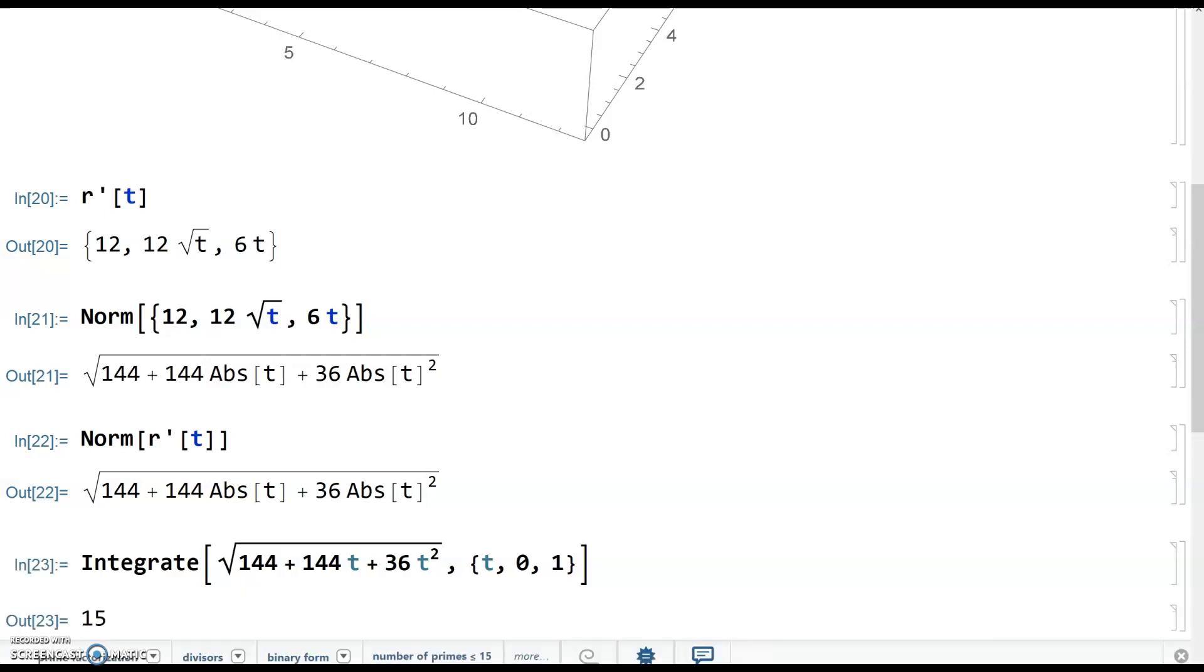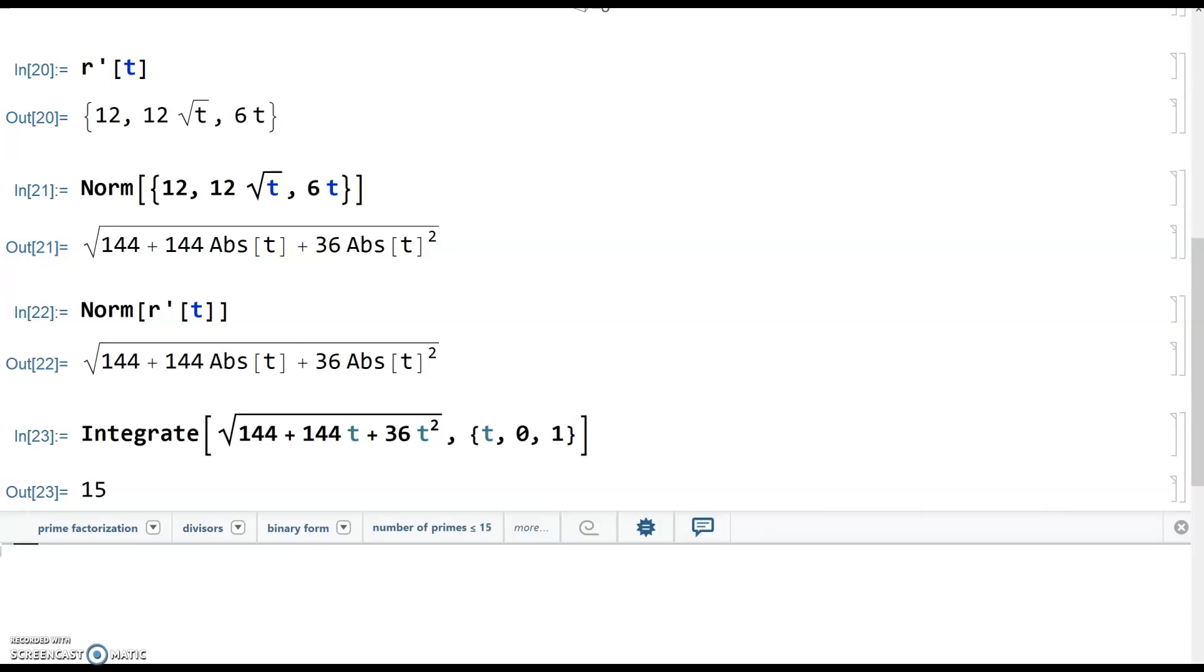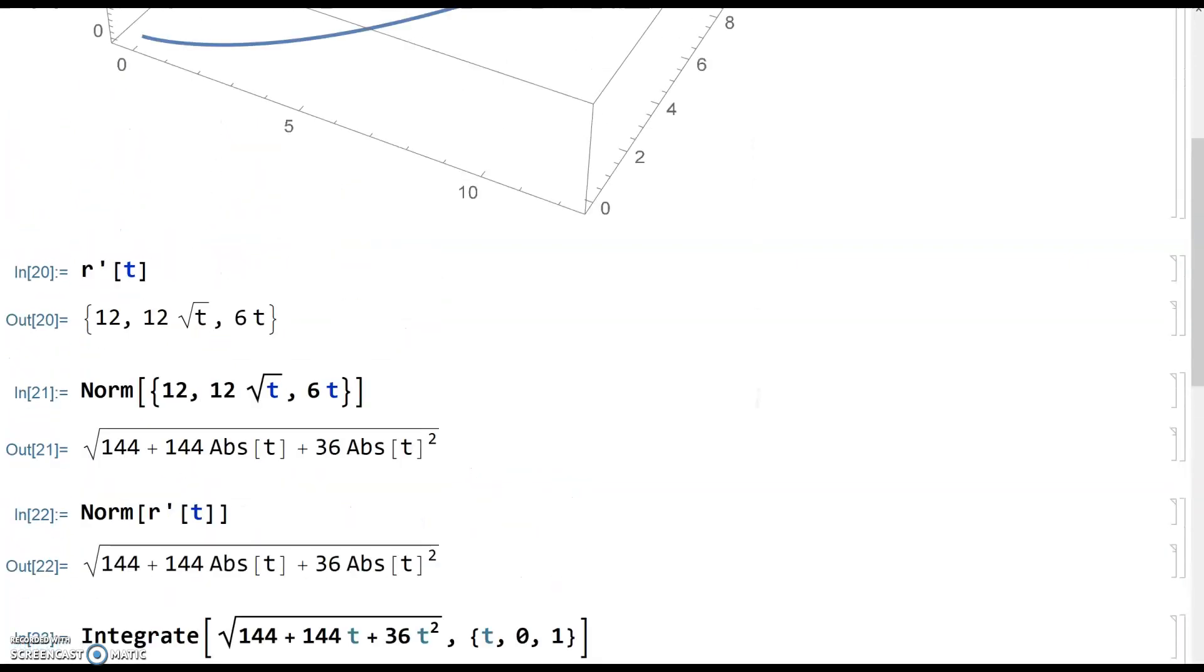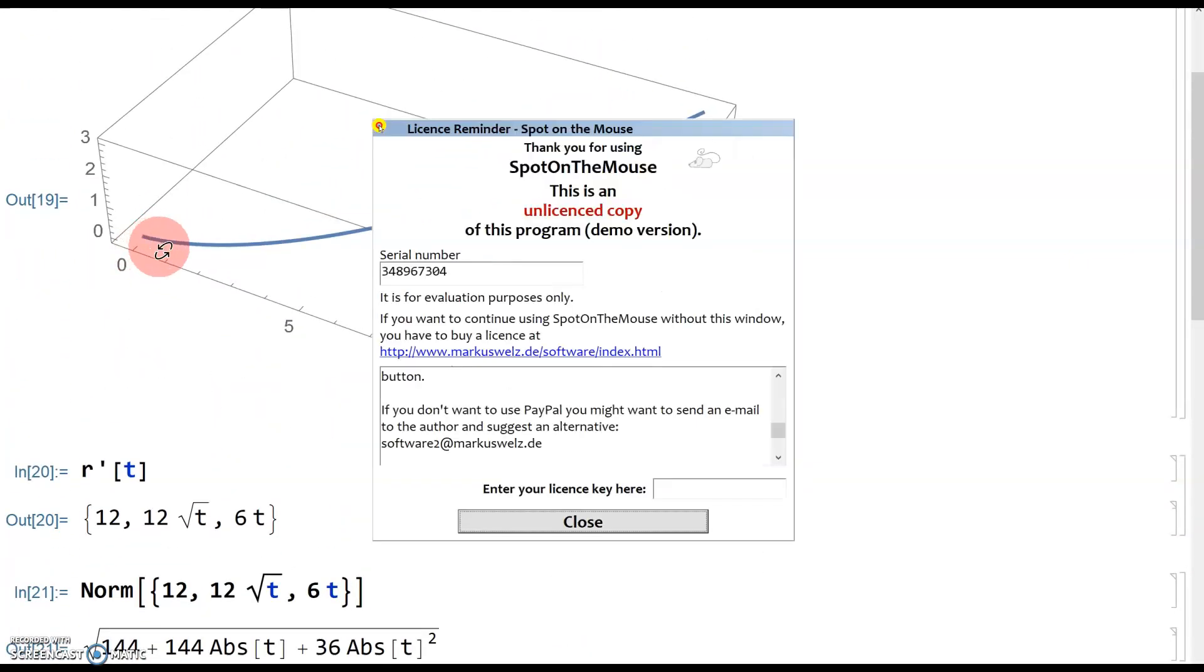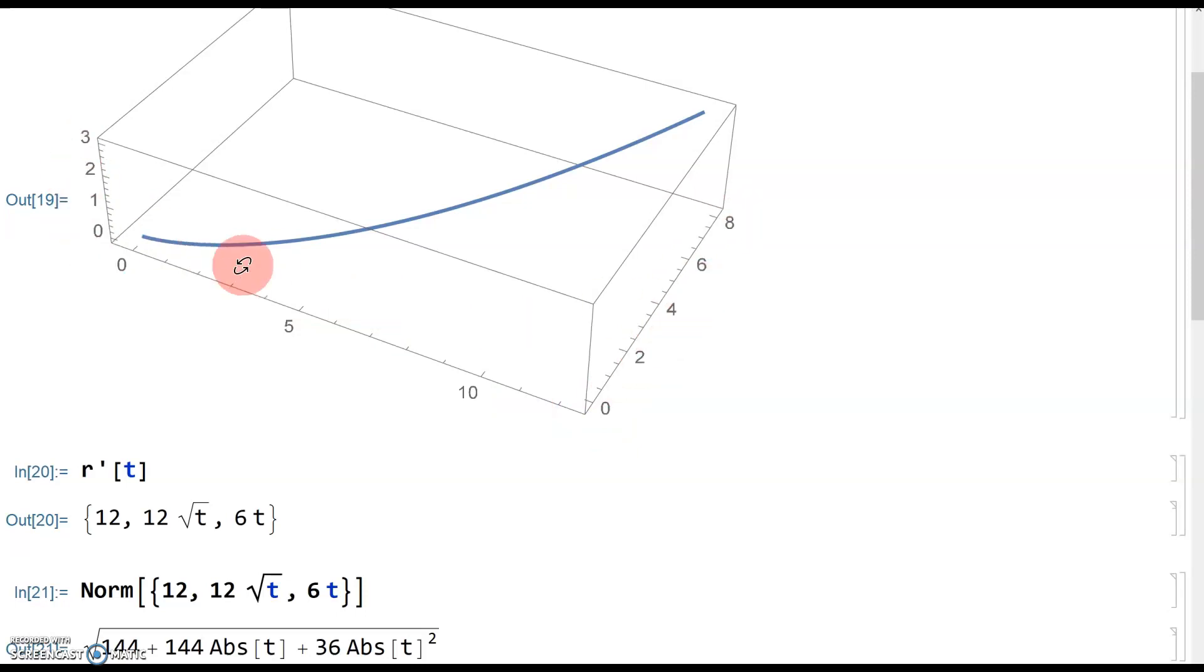Okay. 15. So like I said, this one worked out really nicely, but if you had just some any old random vector function, it would not work out so nicely. But that makes sense back to our graph. You can see that the curve is about, yeah, 15 seems reasonable because it's going from zero to 10 along one axis, zero to eight on another axis, and then zero to three on the vertical axis right there.